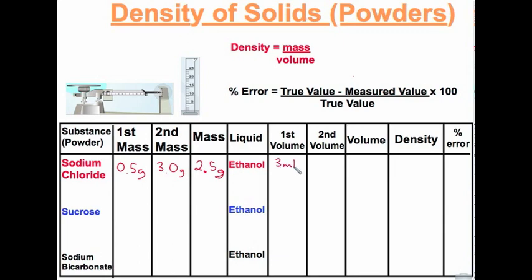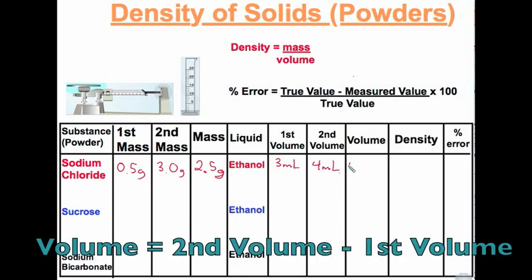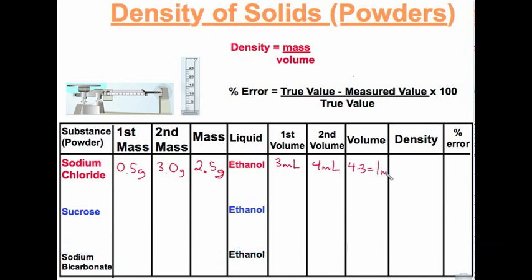Put these on our data table. First volume is 3 milliliters. By displacement, the volume went up to 4 milliliters, which means the volume that we put in, 4 minus 3, is 1 milliliter.